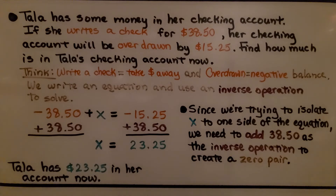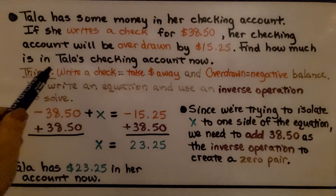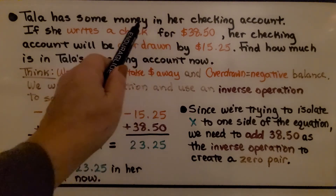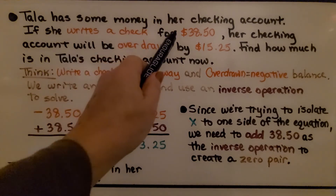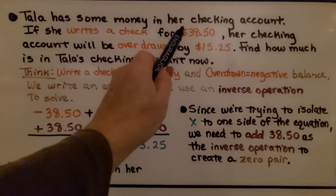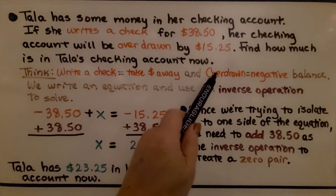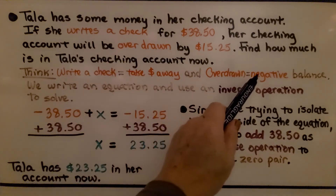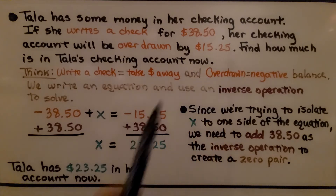Tala has some money in her checking account. If she writes a check for $38.50, her checking account will be overdrawn by $15.25. Find how much is in Tala's checking account now. Writing a check means taking money away, so we subtract $38.50. Overdrawn means a negative account balance.